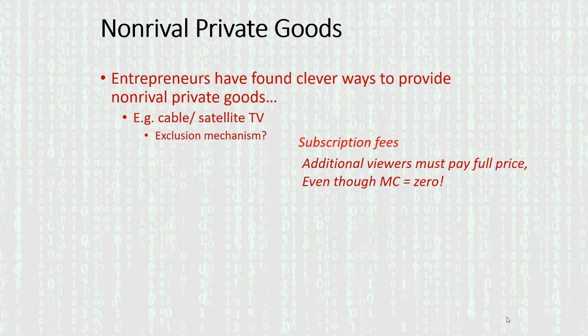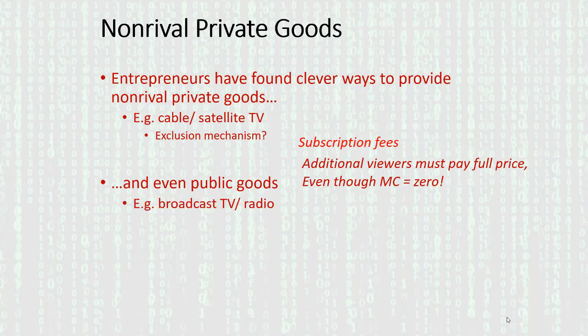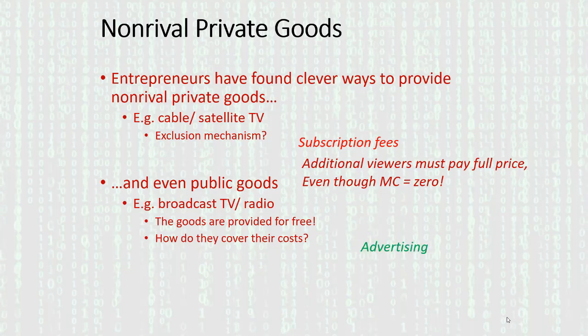Cable and satellite TV, for example, can exclude users via subscription fees. Additional viewers must pay full price even though the marginal cost is zero, which leads to some efficiency implications — but in my personal opinion, those are pretty minor. Entrepreneurs can even, to a certain extent, provide public goods. Broadcast TV and radio would be examples of that.